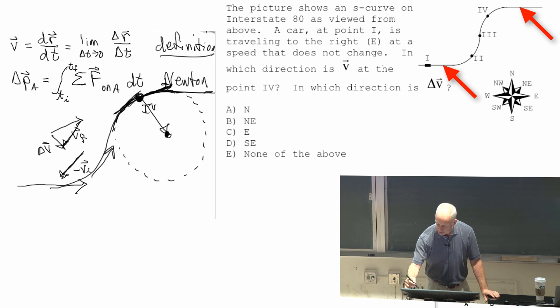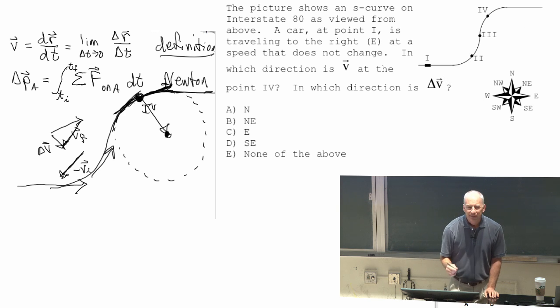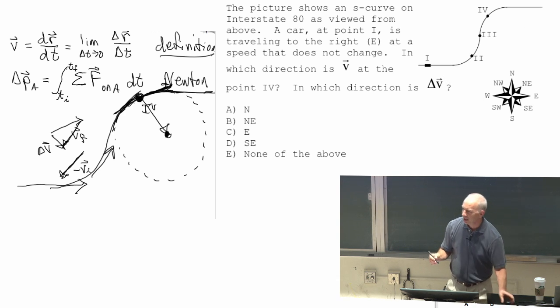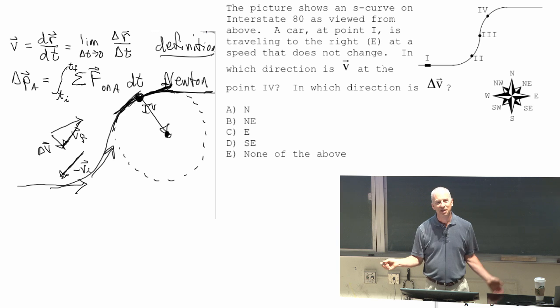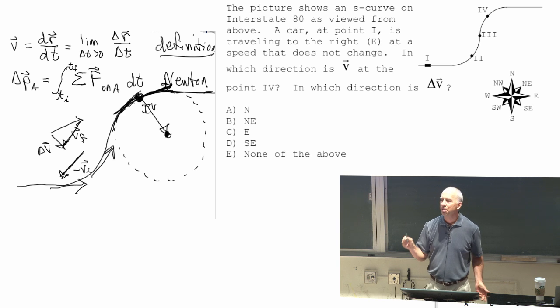And you're not looking at what's happening right at that point. So you don't have to take the limit as delta t goes to zero, but you should think of taking a delta t that's really small. So it's a representative delta v.